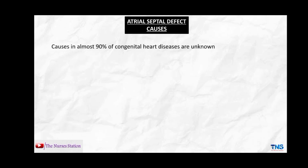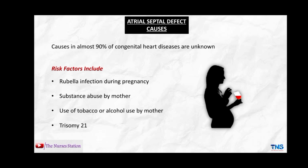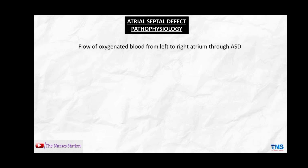In almost 90% of congenital heart disease cases the cause is unknown. Factors that increase the risk of atrial septal defect include rubella infection during pregnancy, substance abuse by the mother, use of tobacco or alcohol by the mother, or trisomy 21, also called Down syndrome. Due to the abnormal opening in the atrial septum, blood flows from the high pressure left atrium to the lower pressure right atrium through the defect, leading to volume overload on the right side of the heart.